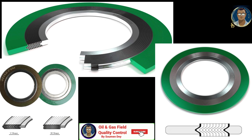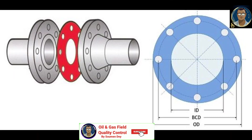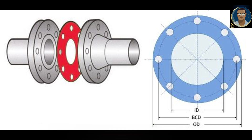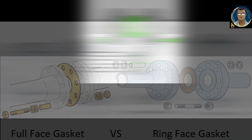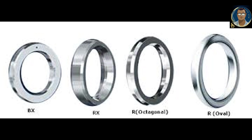Composite gaskets are used on raised face, male-female, tongue and groove, and full face flanges. Regarding gasket configuration: full face gaskets cover the entire flange face and include bolt holes — they can only be used with full face flanges. IBC (inner bolt circle) gaskets are commonly used on raised face flanges; the RF flange concentrates more pressure on a smaller gasket area, thereby increasing the pressure containment capability of the joint. RTJ — metal ring type joint gaskets.